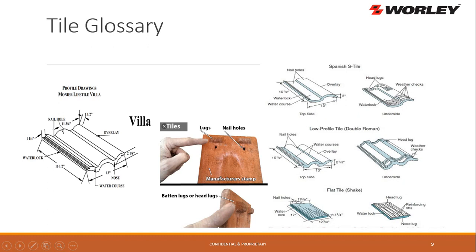Here's the tile glossary. We've got the villa tile with the head of the tile, the nail holes, the toes, the nose or bottom of the tile — sometimes called the tail. Then you've got the water channel, the interlock channel, the overlay channel, and the water grooves. When you flip it over, you'll see the head lugs — the lug lays on top of the batten, and the nail holes are for the batten. You've got the batten lugs, weather checks to keep water from backing up, and the interlock. For Spanish low profile and flat profile tiles, there's a reinforcement rib.